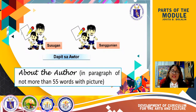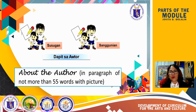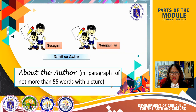It is also a must to place an 'About the Author' section. You are going to write it in paragraph form of not more than 55 words, with your picture. You write only the most essential facts about you as a writer.